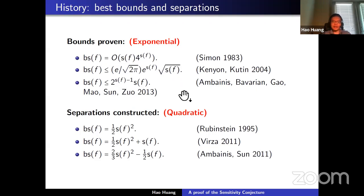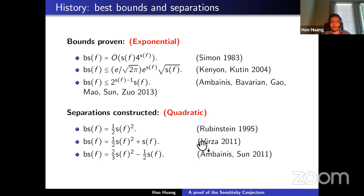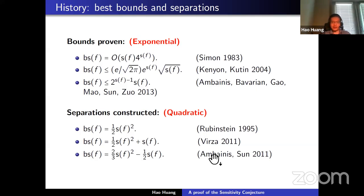For separations, Rubinstein's function gives block sensitivity equal to half the sensitivity squared. Virza in 2011 improved this, and Ambainis and Aaronson in 2011 introduced a different construction improving the constant from one-half to two-thirds. So before 2019, all upper bounds were exponential and all separations were quadratic.